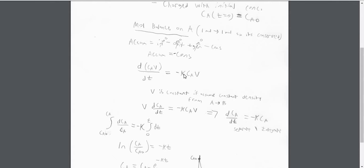Which is K times Ca times V. Since V is constant, we're going to assume that the density from A to B is the same, and that would mean that the volume is constant.